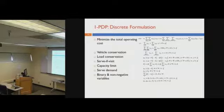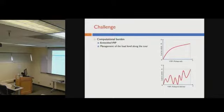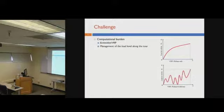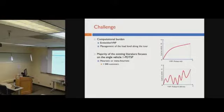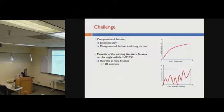The formulation is pretty straightforward, but the real challenge is how to solve this problem, especially for large-scale systems. This type of pick-up and delivery routing problem is more difficult than solving the standard VRP, because of the additional decision to manage load levels along the tour — it goes up and down all along the trip. Due to this computational burden, most efforts nowadays have been focused on developing heuristic or meta-heuristic methods to solve even the single-vehicle version, called the one-commodity pick-up and delivery TSP (1PDTSP). Even then, we can only solve instances with fewer than 500 customers.